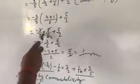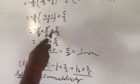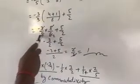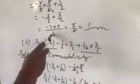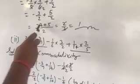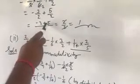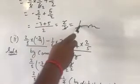Minus 3 upon 5 into 4 plus 1 is 5 upon 6 plus 5 upon 2. The 5s cancel out, giving minus 3 upon 2 plus 5 upon 2. Now taking LCM as 2: minus 3 plus 5 divided by 2, equal to 2 upon 2. The 2s cancel out, equal to 1.